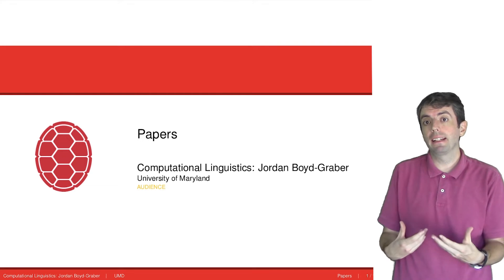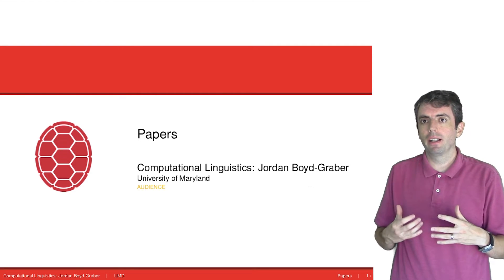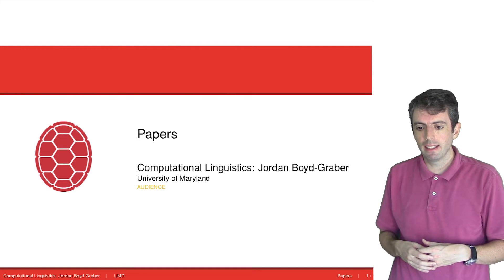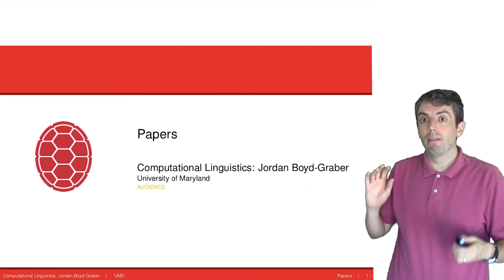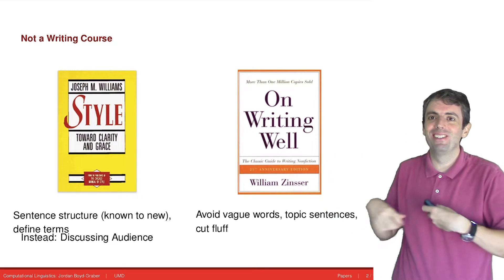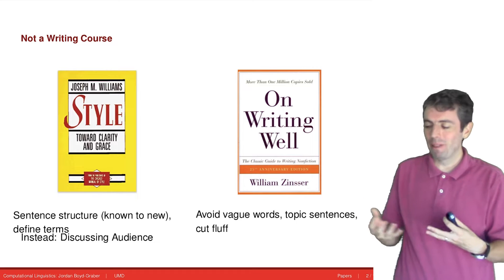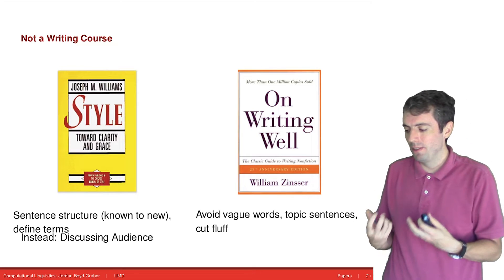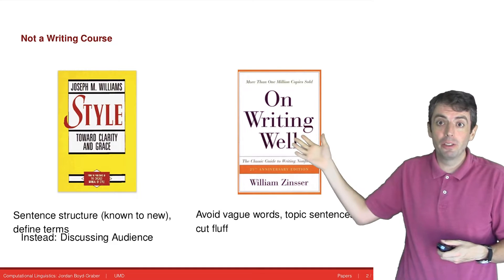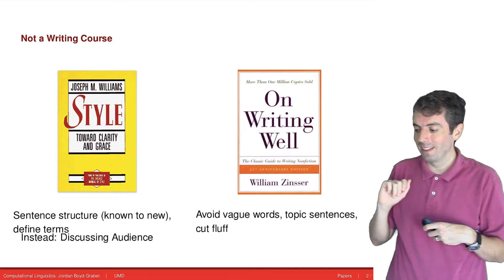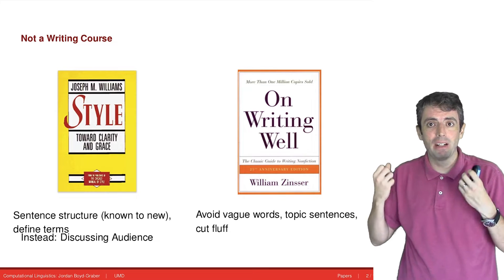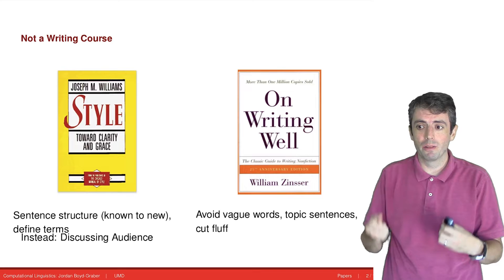In the last video I talked about the mechanics of writing, and now I want to talk a little bit more about the actual craft of writing. And this is not a writing course. I can't do justice to the many, many pages that have been written about what it means to write well. And so here are two books that I really like: Style Towards Clarity and Grace and On Writing Well — they talk a lot about very important stuff, even to computer scientists.